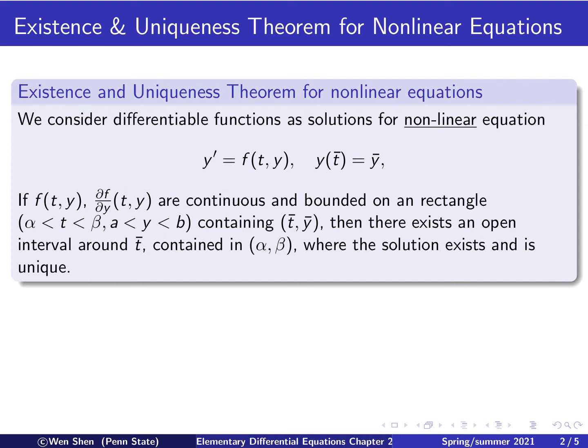Here is the assumption: the function f of t, y and the partial derivative ∂f/∂y of t and y, they are both continuous and bounded on a rectangle. The rectangle in the t y plane will be t between alpha and beta and y between a and b. This rectangle must contain the initial data, that is t bar, y bar.